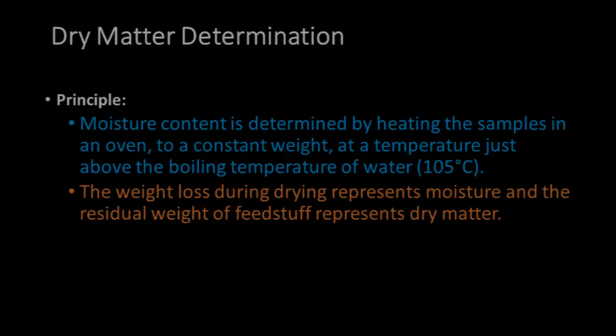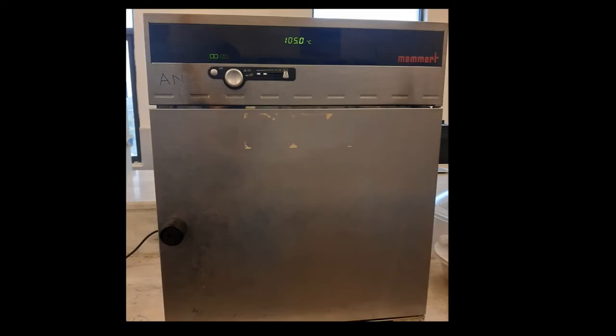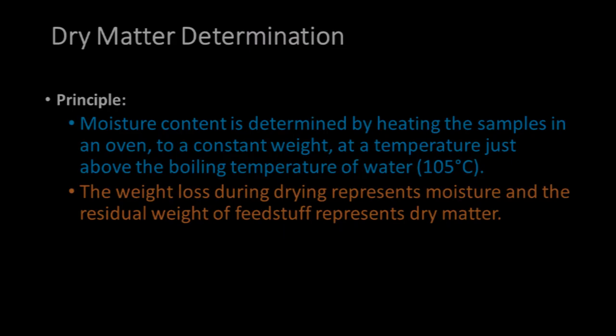Principle of dry matter determination: Moisture content is determined by heating the sample in an oven to a constant weight at a temperature just above the boiling temperature of water, that is 105 degrees Celsius. The weight loss during drying represents the moisture content and the residual weight of feedstuff represents its dry matter contents.